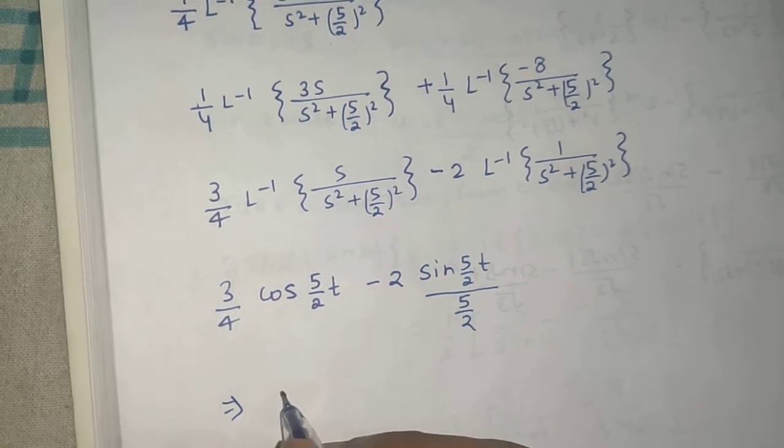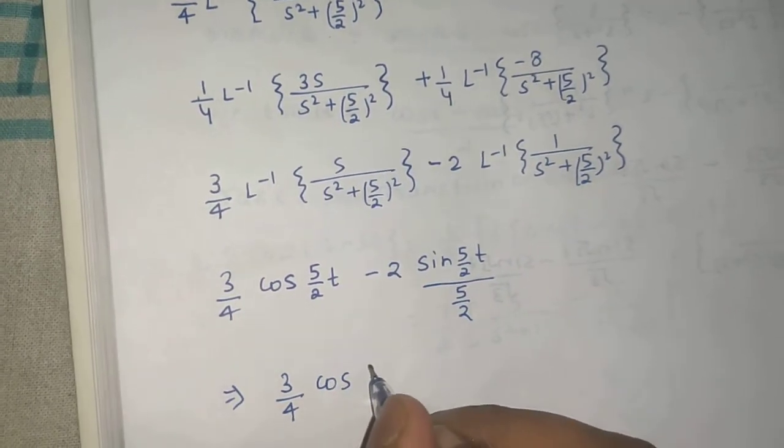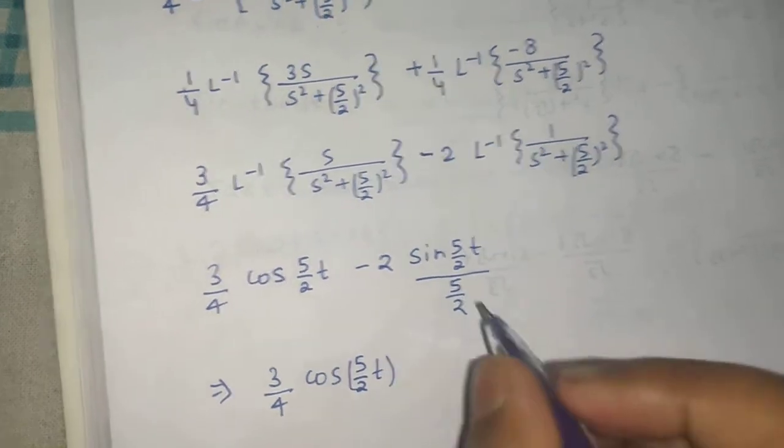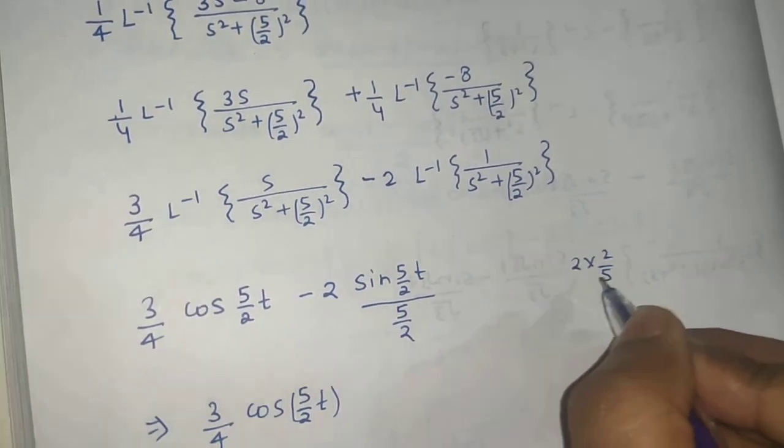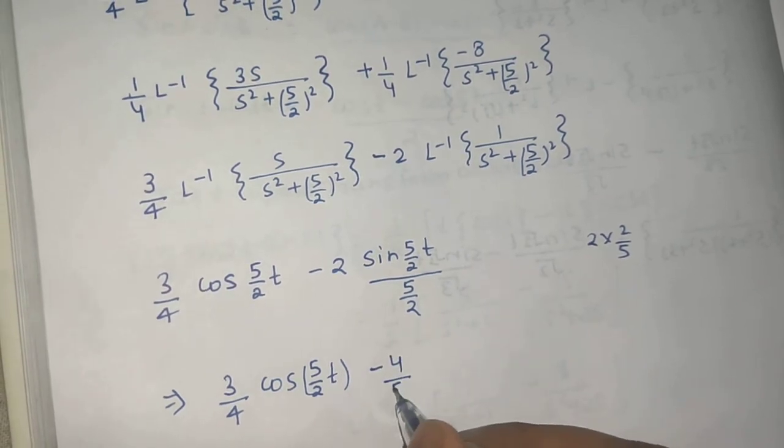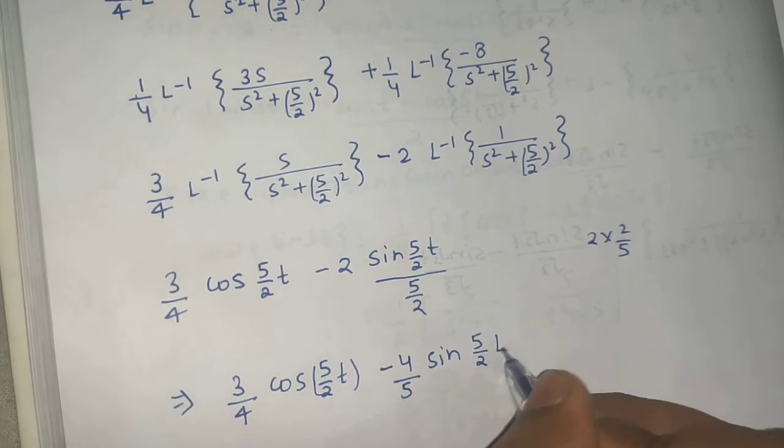So if I simplify this, I will write this as 3 by 4 cos 5 by 2 t. And this will come out as 2 into 2 by 5, so 4 by 5, so minus 4 by 5 sin 5 by 2 t.